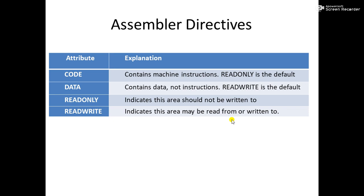There are four attributes for assembly directives: code, data, read-only, and read-write. Code indicates the area contains machine instructions and is read-only by default. Data contains only data, not instructions, and is read-write by default since data needs to be both read and written. Read-only means the area can only be read, and read-write means the area may be read from or written into.